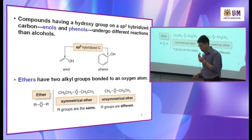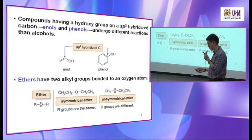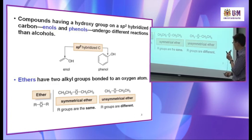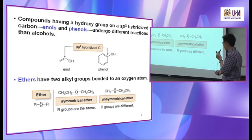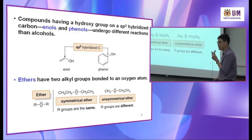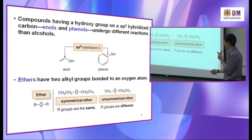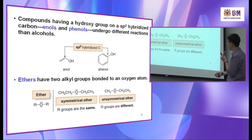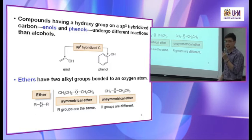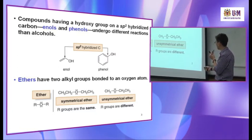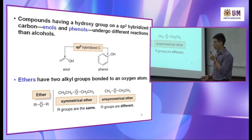Ethers have two alkyl groups bonded to an oxygen atom. If the two alkyl groups are the same, they are called symmetrical ether — for example, two ethyl groups makes a symmetrical ether. If the two alkyl groups are different, they are called asymmetrical ether. It's very simple — the R groups are different.